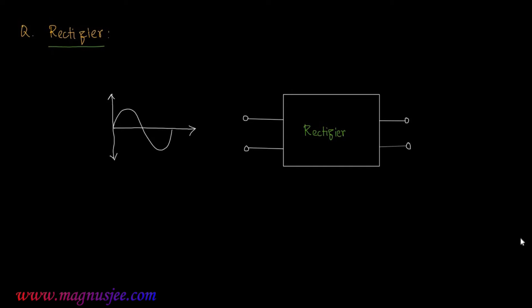The input signal is an alternating voltage. Voltage is plotted along the vertical (Y) axis and time is plotted along the horizontal axis. The input terminals receive the alternating voltage, and the output terminals are on the other side.